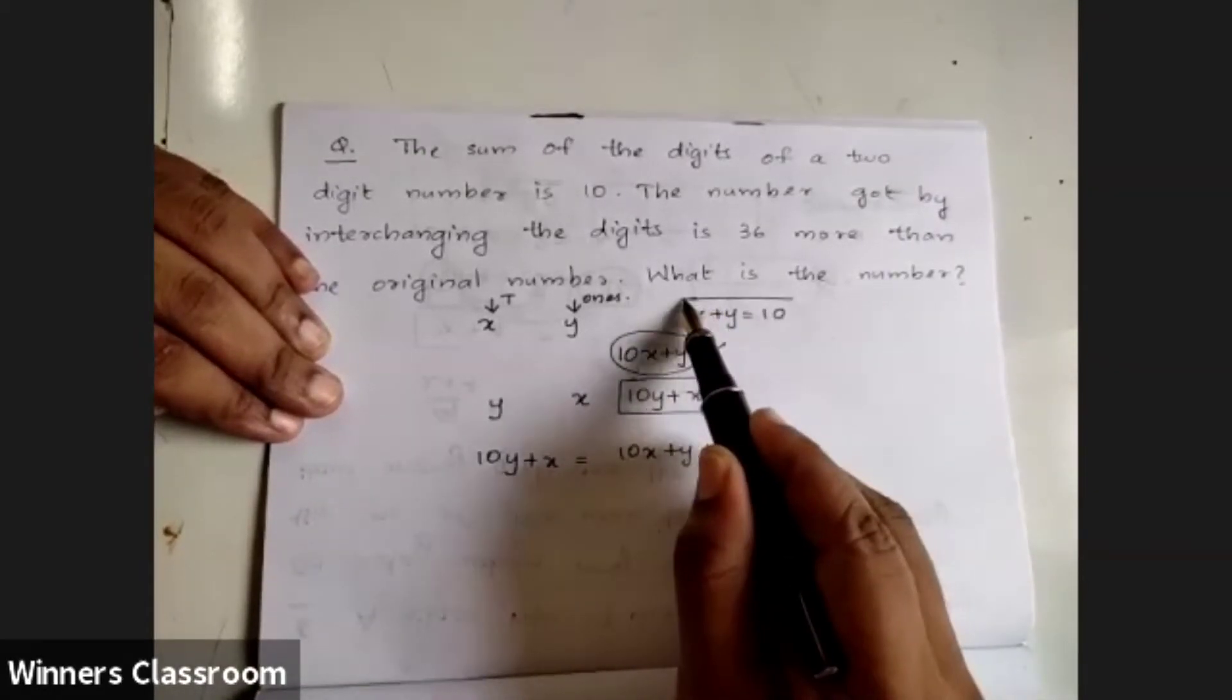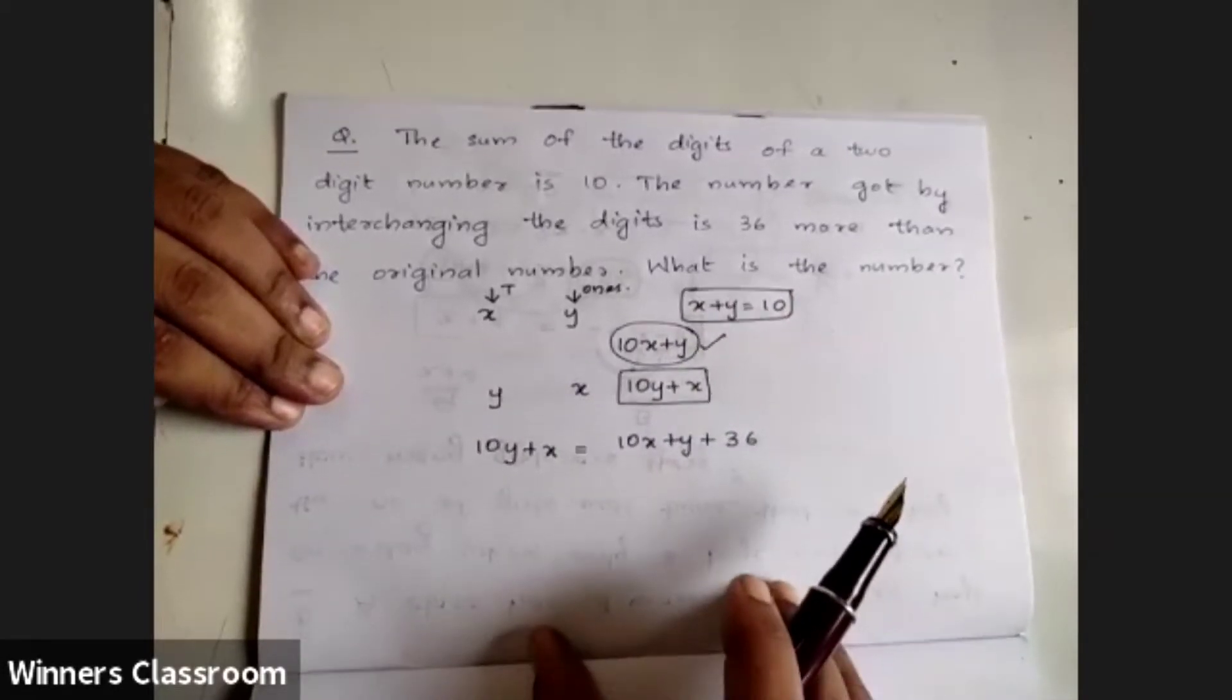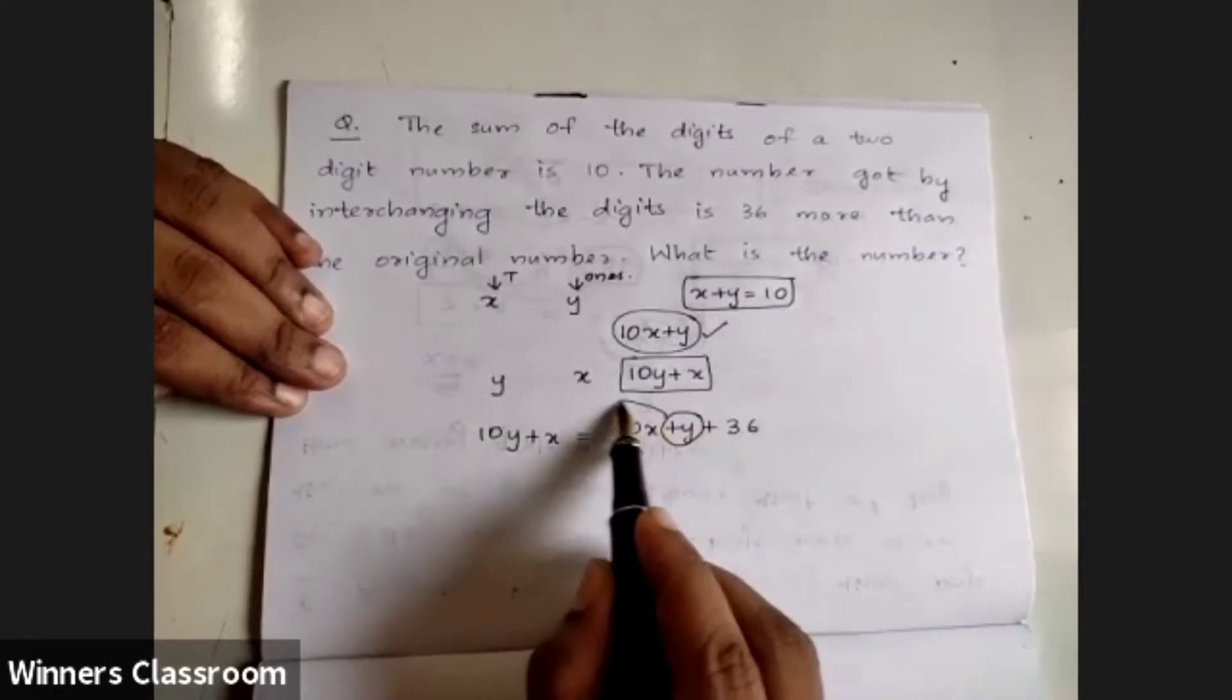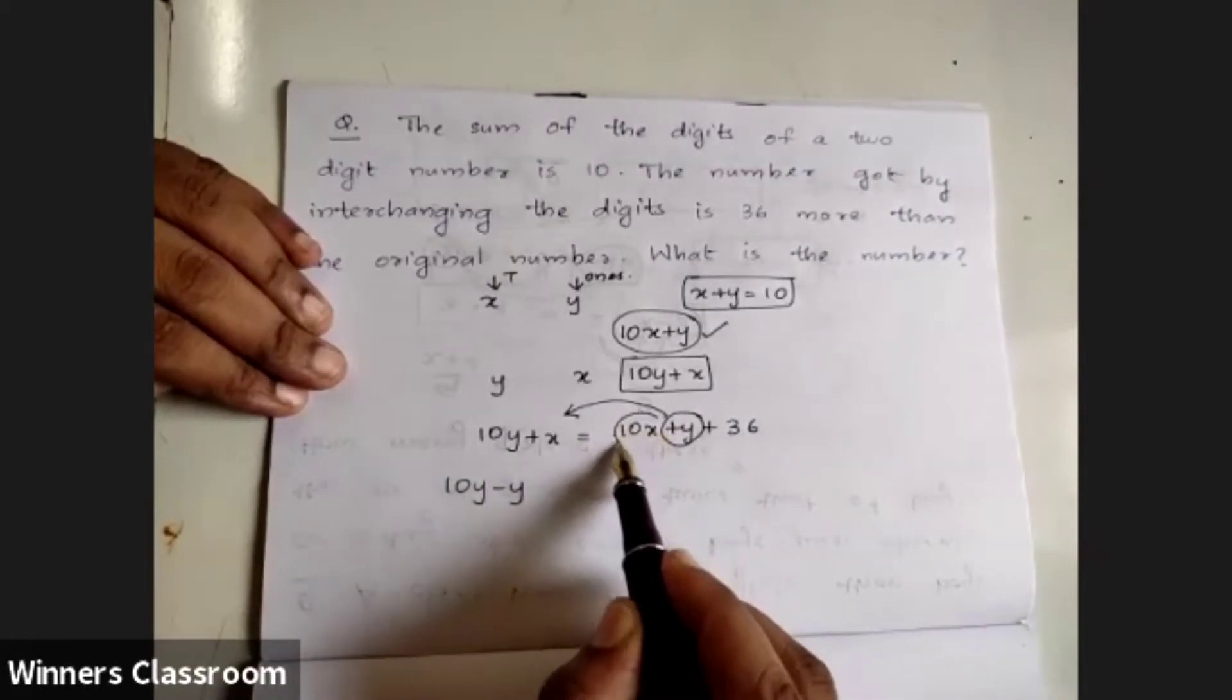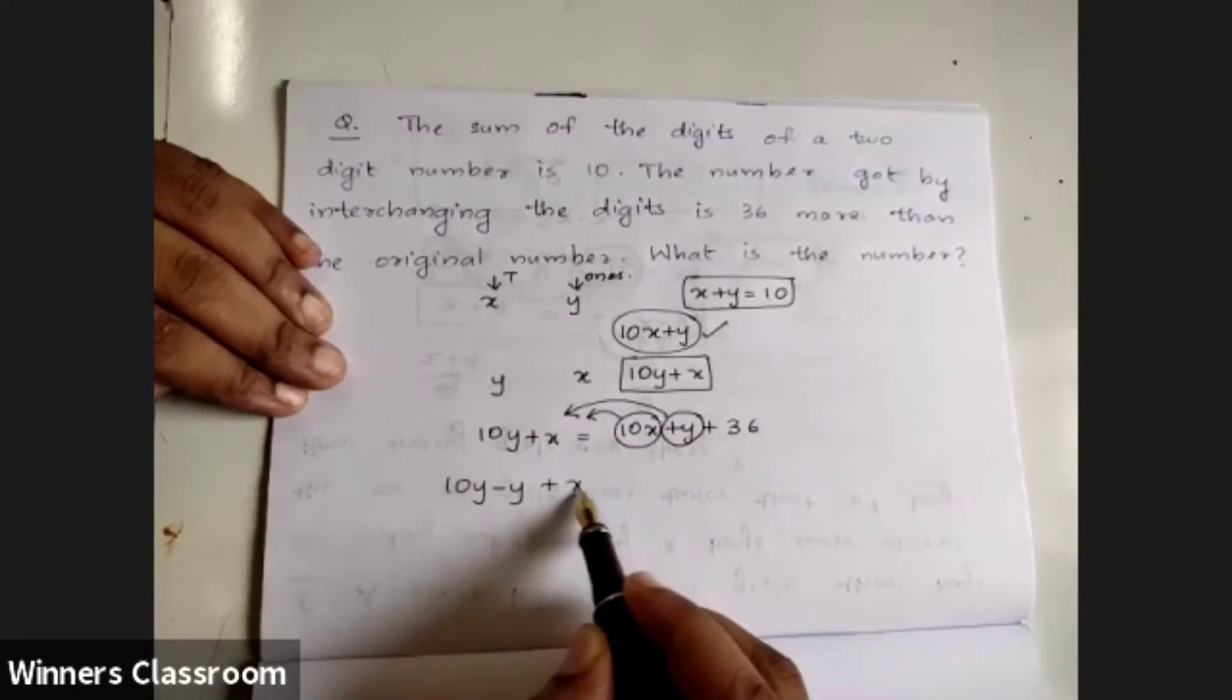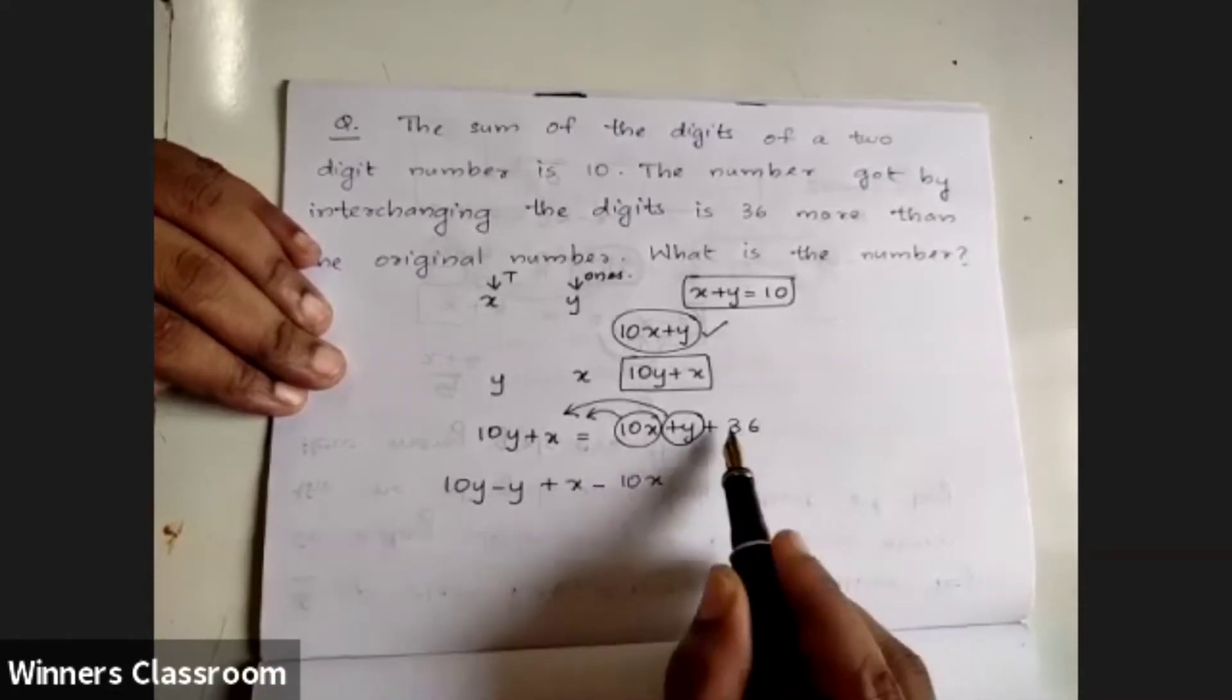Now the difference is 36, so we have x plus y equals 10. We need to write the equation: 10y plus x minus 10x minus y equals 36. This simplifies to 9y minus 9x equals 36.